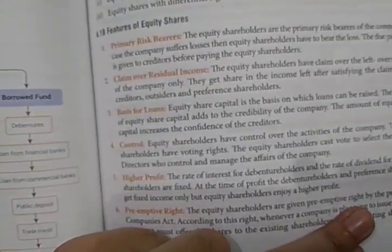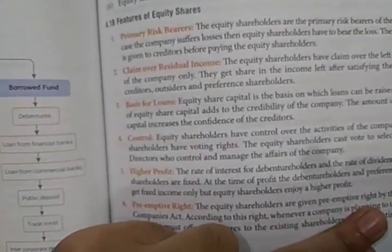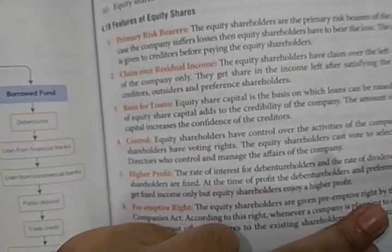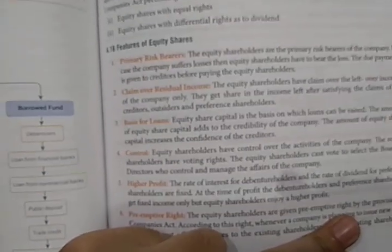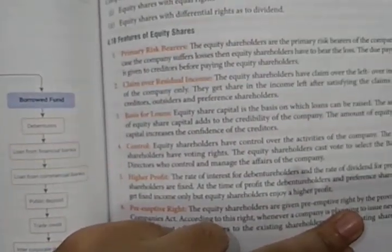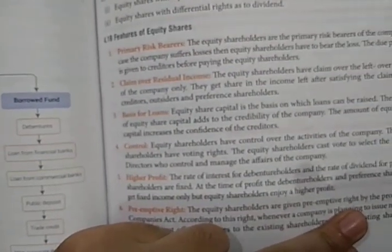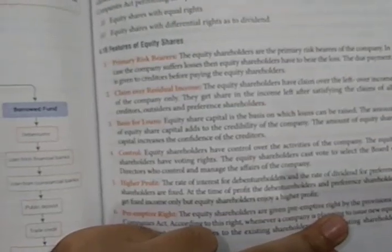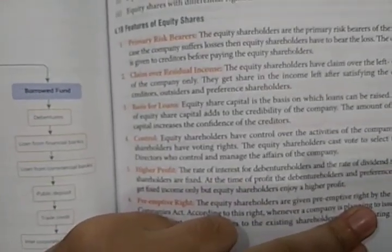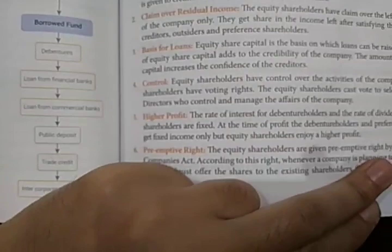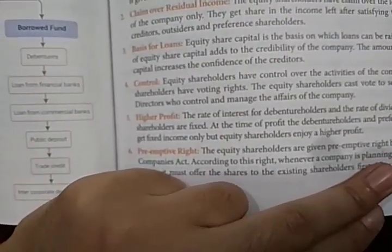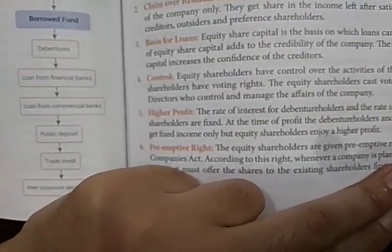Next is control. Equity shareholders have control over the activities of the company because they have voting rights. They can even vote for the board of directors and participate in day-to-day activities and long-term decisions.